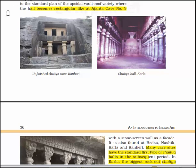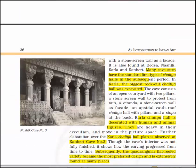Before moving ahead let's look at these images. This is the unfinished chaitya cave at Kanheri, and this is the chaitya hall at Karla. It is also found at Bedsa, Nashik, Karla and Kanheri. Here you will see Nashik cave number 3. Many cave sites have the standard first type of chaitya hall and at Karla the biggest rock-cut chaitya hall was excavated.